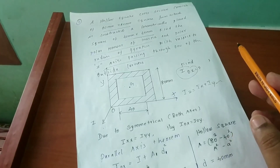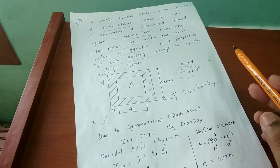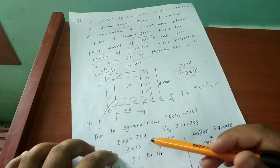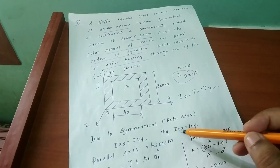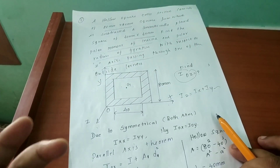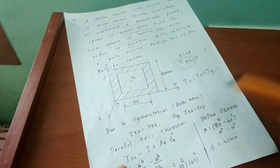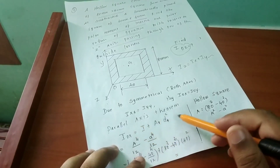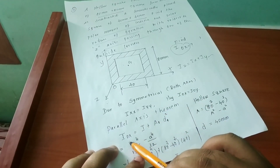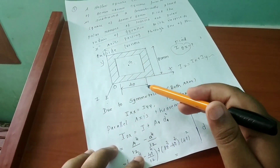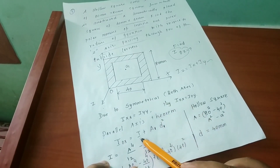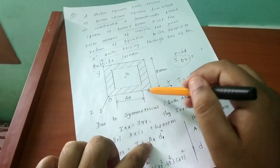Since both axes are symmetrical, we write Iox equals Ioy, that is Ix equals Iy. To solve for the O-axis, we apply the parallel axis theorem: Iox equals I-bar plus A times d². Here A is the area of the hollow square structure, and d is the distance between the two axes.